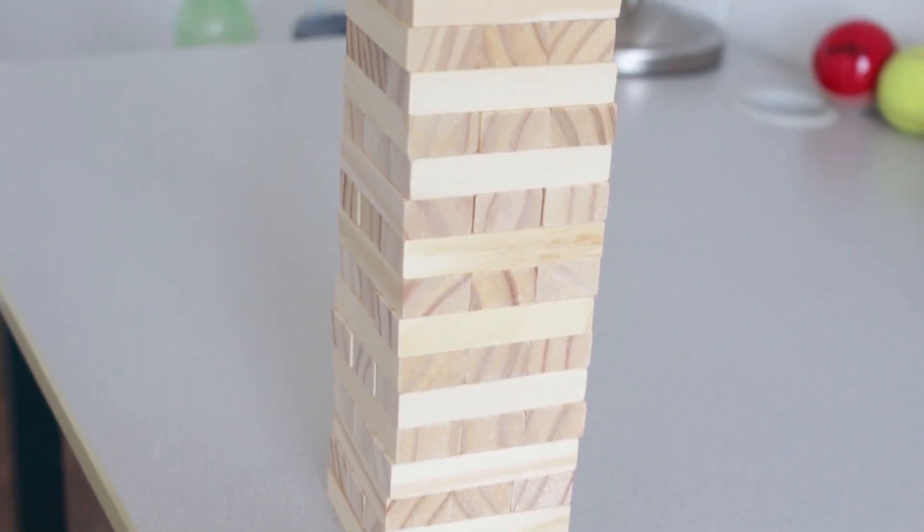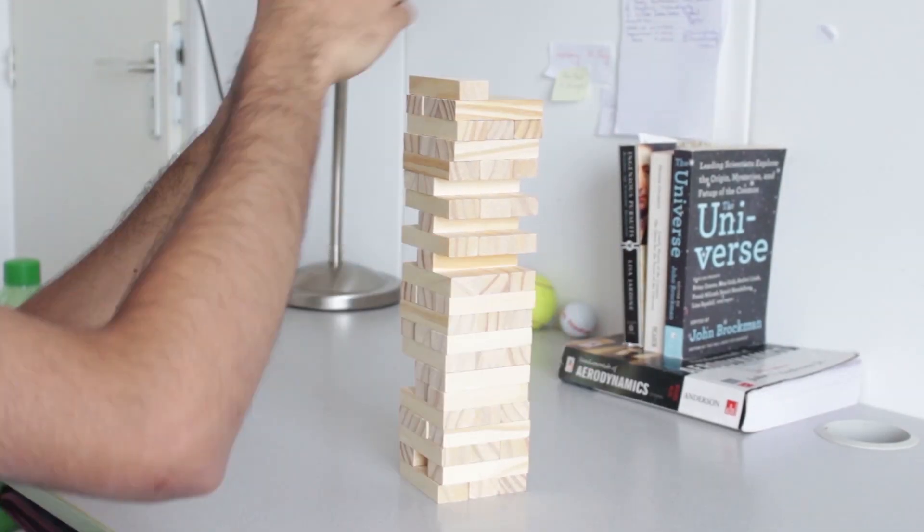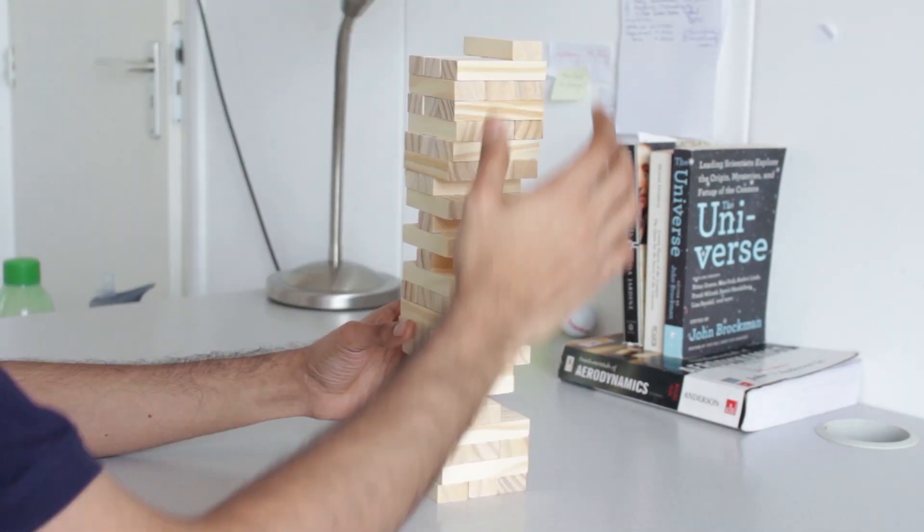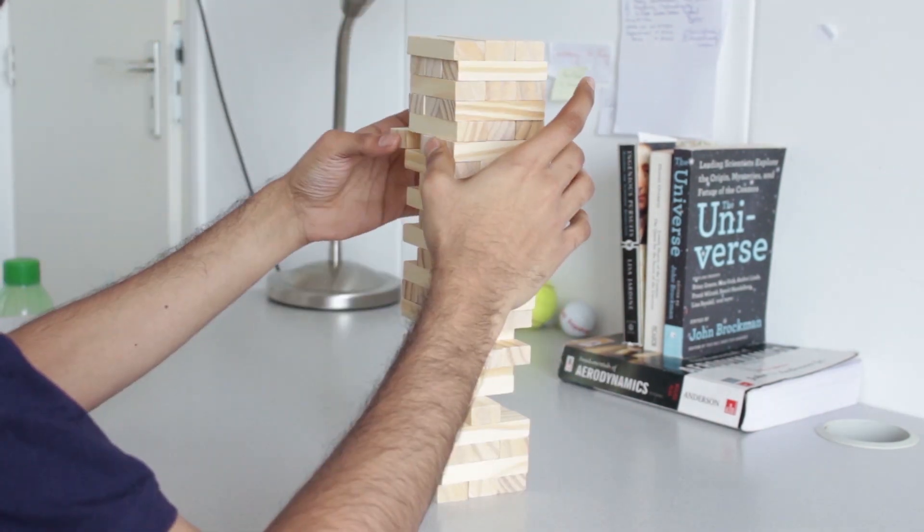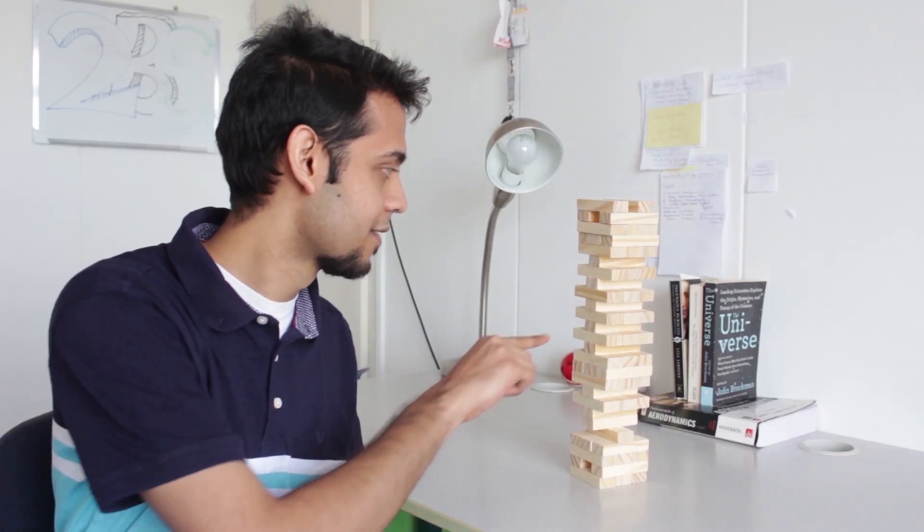If you have ever played with Jenga blocks, you know what we're talking about. You start off nice and structured, just like laminar flow. And as you keep building higher and higher, the tower becomes less and less stable, exactly like the transitional regime in fluid flow. One small disturbance at this transitional phase. Turbulence.